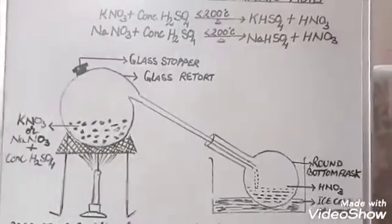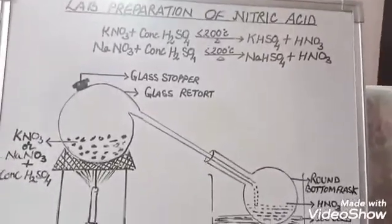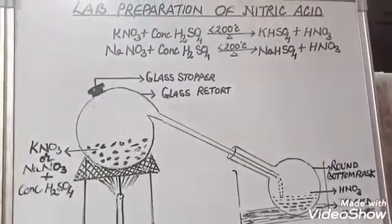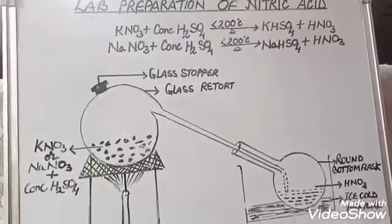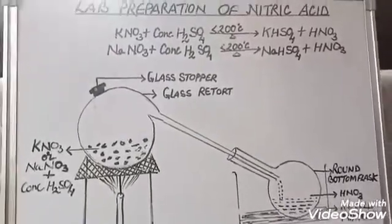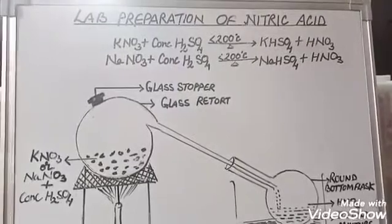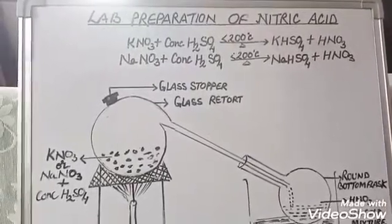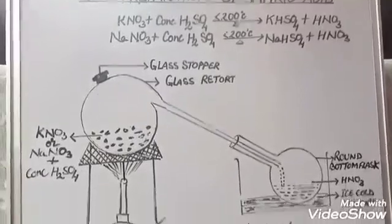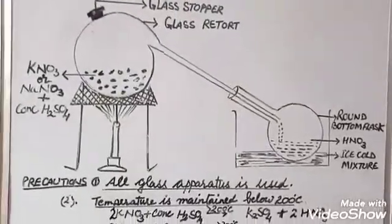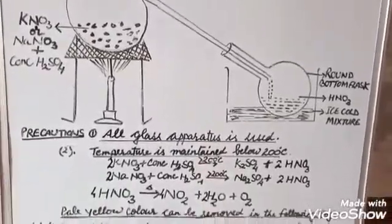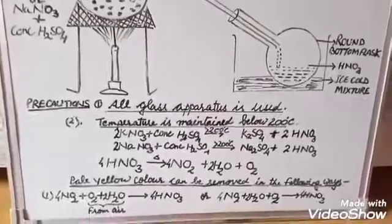For further concentration, this 68% nitric acid is mixed with concentrated sulfuric acid and subjected to fractional distillation when we get 98% pure nitric acid. This 98% pure nitric acid is called fuming nitric acid because it gives out the fumes of nitric acid.